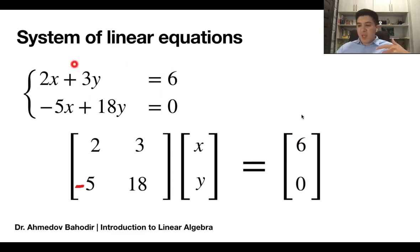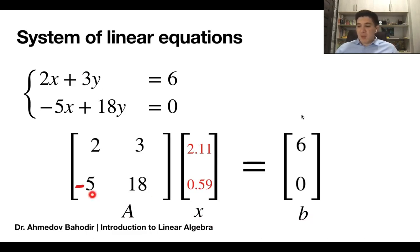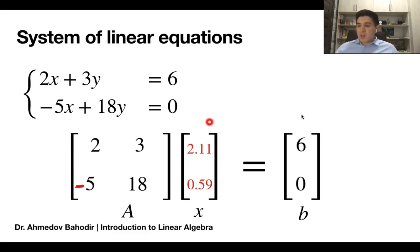The solution of the system of linear equations is equivalent to solving the matrix equation Ax = b. I've got the equation A times x equals b, and I need to find the vector x which is the solution. In this case, the solution vector x has values 2.11 and 0.59. This means that if you multiply matrix A by this vector you get exactly b. At the same time, if you substitute x = 2.11 and y = 0.59 into the system, both equations are satisfied — the left-hand side equals the right-hand side.